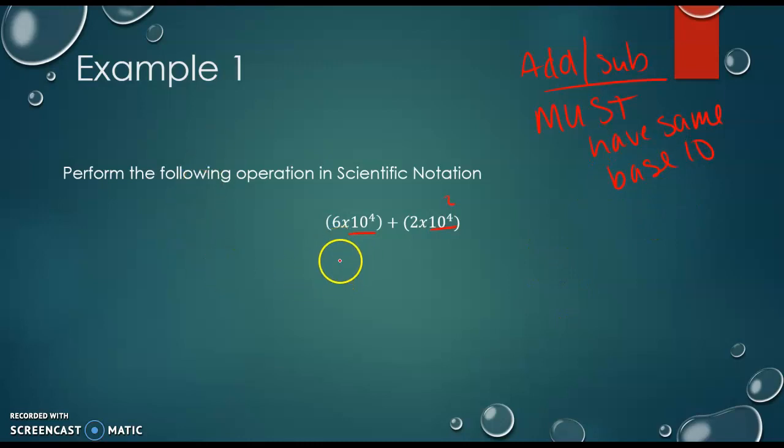From here, I'm just going to do 6 plus 2, and then we keep it times 10 to the fourth power, unless this is greater than 10—a two-digit number—and then we have to move our decimal. But 6 plus 2 is 8, so we're in the clear: 8×10⁴. Just like fractions, when we're adding or subtracting, our exponent doesn't change.